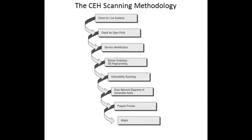Checking for open ports is the second step in the CEH scanning methodology. Port scanning is the method used to check for open ports, involving probing each port on a host to determine which ports are open. Port scanning generally yields more valuable information than a ping sweep about the host and vulnerabilities on the system. Service identification is the third step in the CEH scanning methodology and is usually performed using the same tools as port scanning. By identifying open ports, a hacker can usually also identify the service associated with the port number.